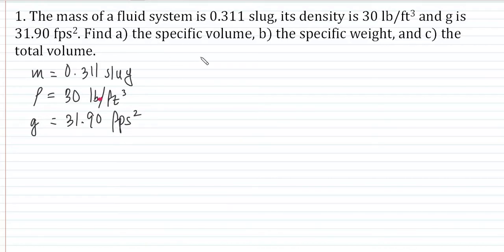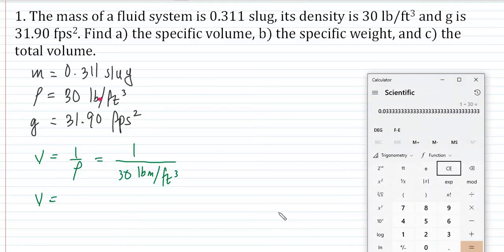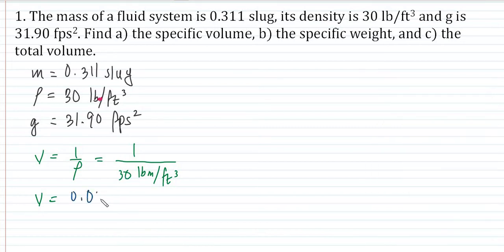First, find the specific volume. The specific volume is fairly easy to find because specific volume is simply the reciprocal of density, and density is also the reciprocal of specific volume. So that is simply 1 over 30 pound mass per cubic foot. Therefore, specific volume is equal to 1 over 30, which is 0.0333, and the unit is cubic feet per pound mass.